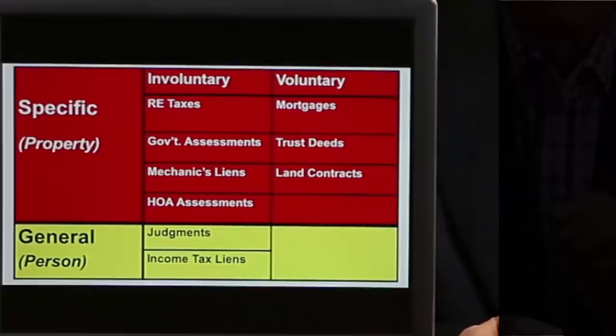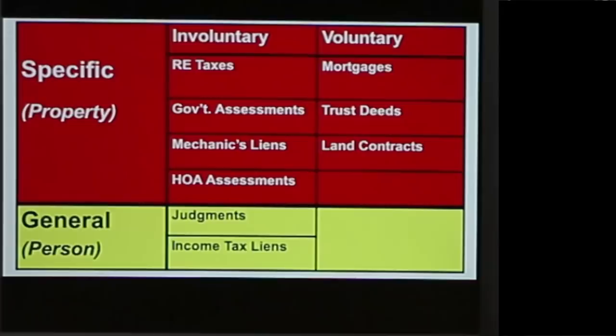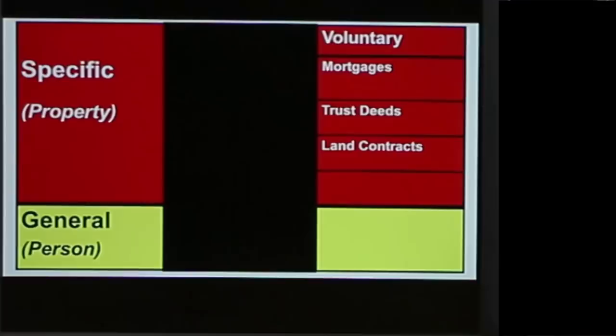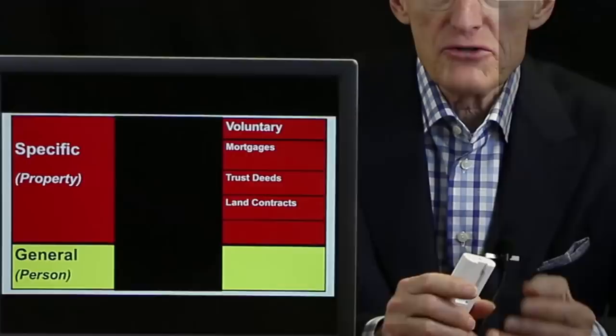In this lesson, we're going to get into voluntary liens and foreclosures. In an earlier lesson, we talked about involuntary and voluntary liens. The involuntary liens were taxes, assessments, judgments, and so on. Today we're going to focus on the voluntary liens, namely mortgages, deeds of trust, and land contracts. So let's get started.